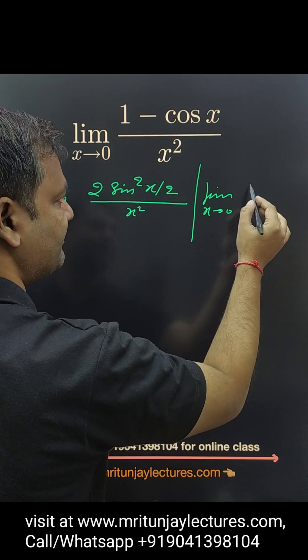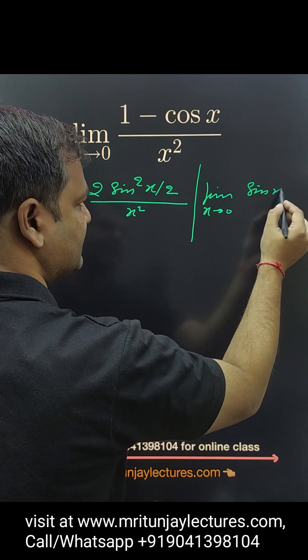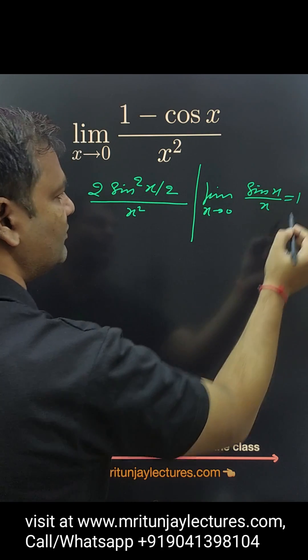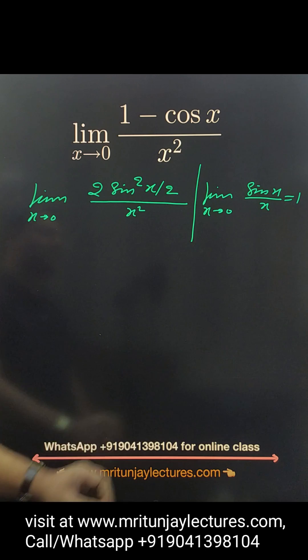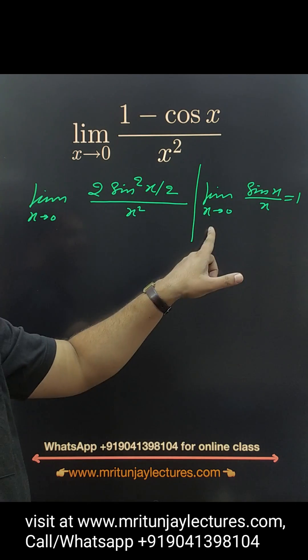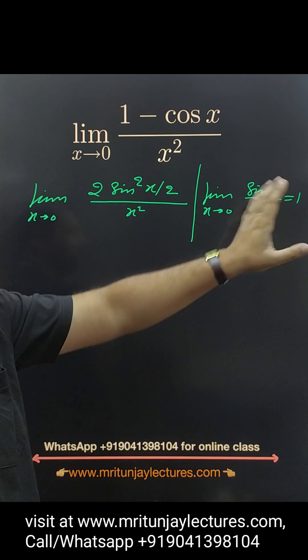If you want to make this like x tends to 0, sin x by x, this will equal 1. If you have sin x upon x when x tends to 0, that is always equal to 1.